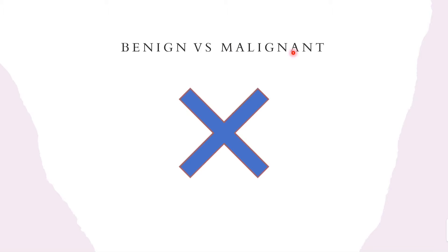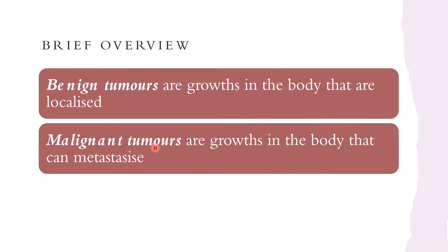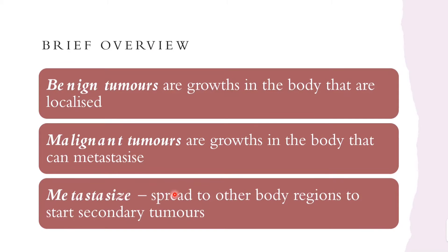We're going to look at the differences between benign and malignant tumors. A benign tumor is generally a growth that is localized — it stays in one specific part of the body. A malignant tumor is a growth that can metastasize, meaning it can spread to other regions of the body to start secondary tumors. That is the main difference between benign and malignant tumors.